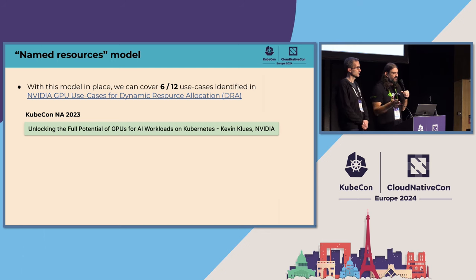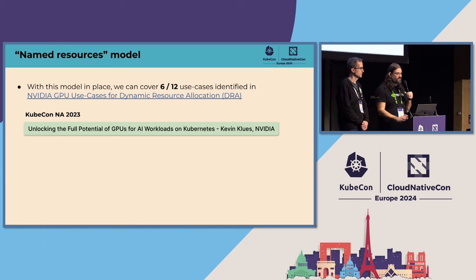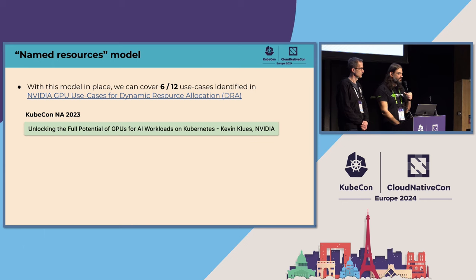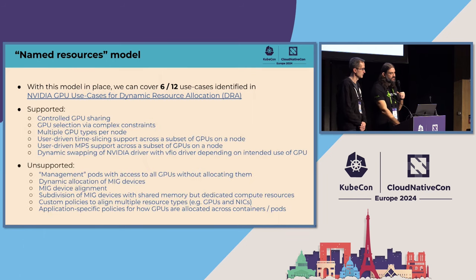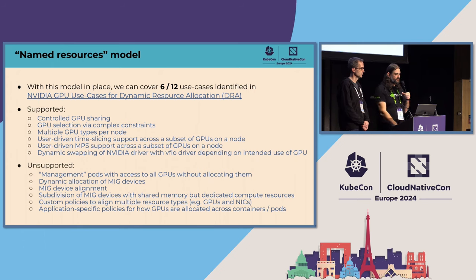Even with this very simple model for named resources, I have a document called NVIDIA GPU Use Cases for Dynamic Resource Allocation where I outlined 12 use cases that DRA is able to solve for GPUs that you can't do with the existing device plugin API. Even with this very simple named resources model, we already cover six of those 12 use cases — a pretty good number given how simple this model is. These are the same use cases I identify in my talk from KubeCon last November, where I go into lots of details about how DRA works and how it maps to the different problems we're trying to solve with GPUs.